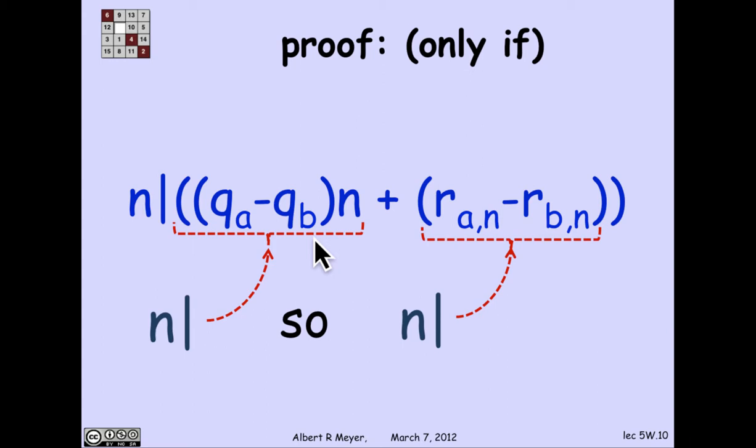And it, therefore, has to divide the other term as well. Because the only way that n can divide a sum when it divides one of the summands is if it divides the other summand.